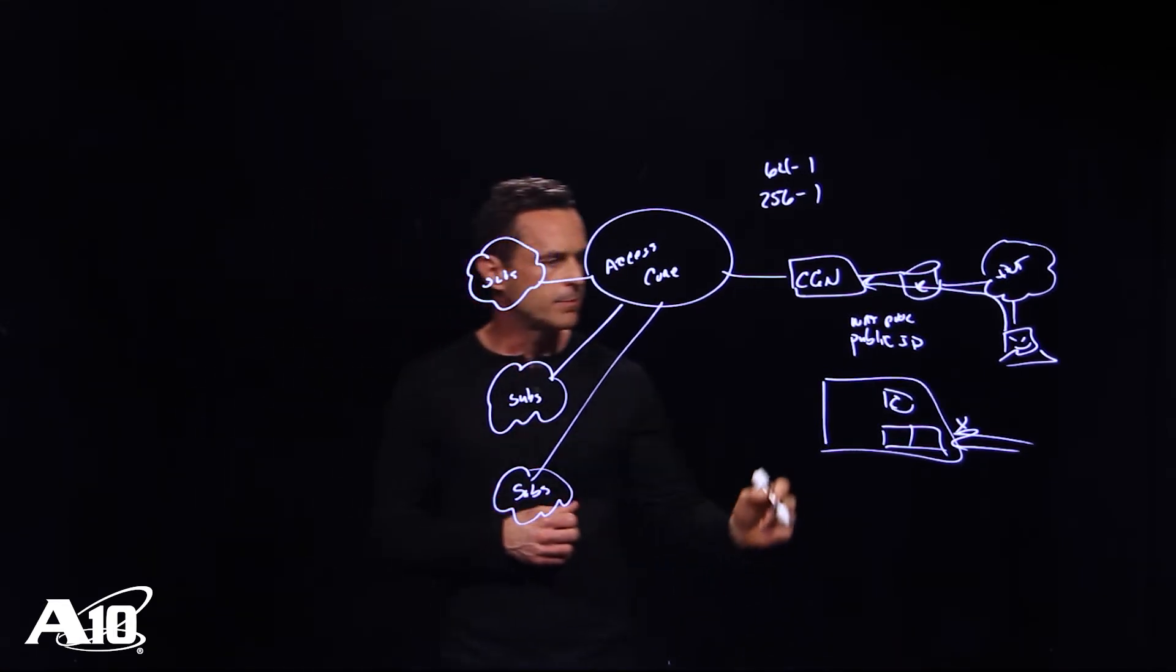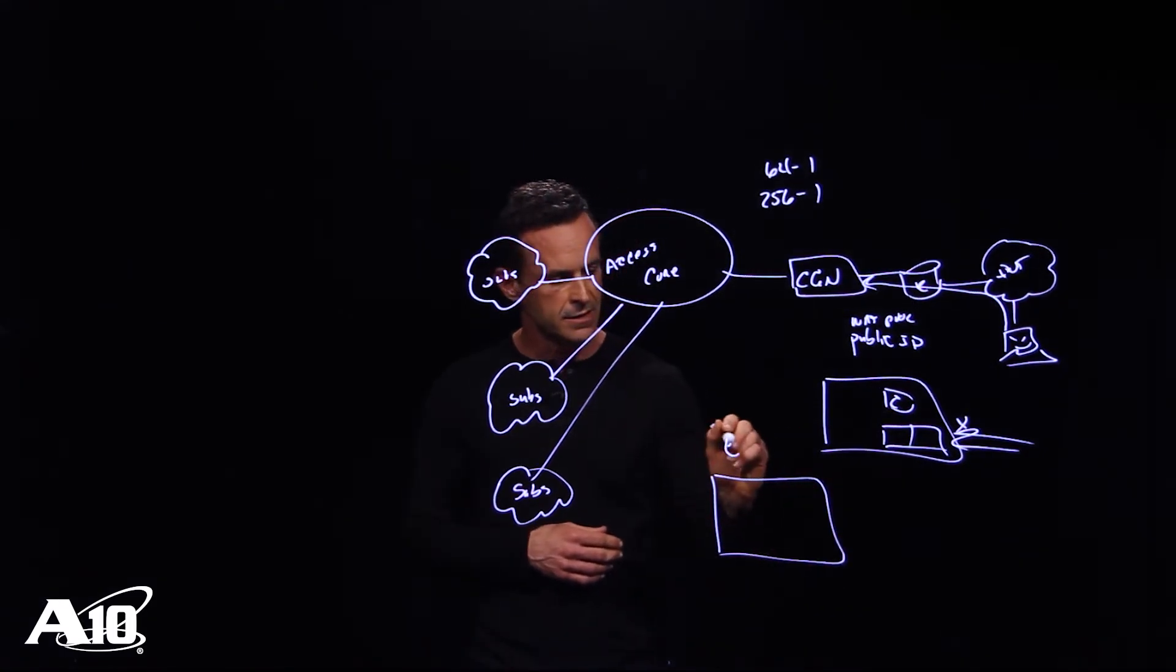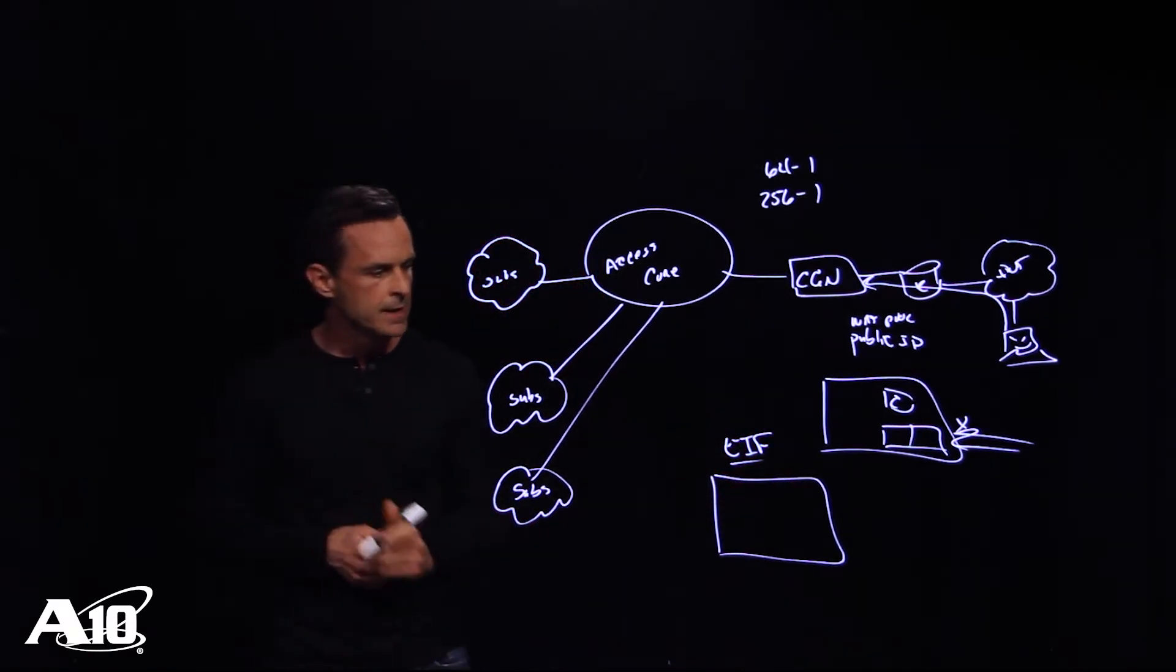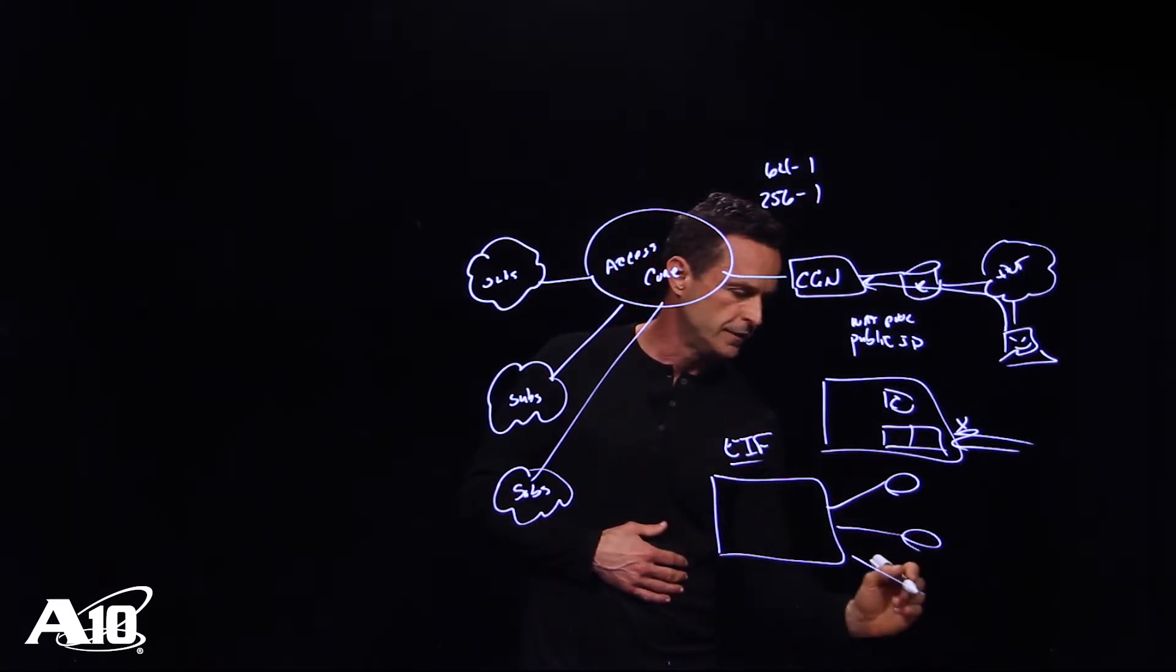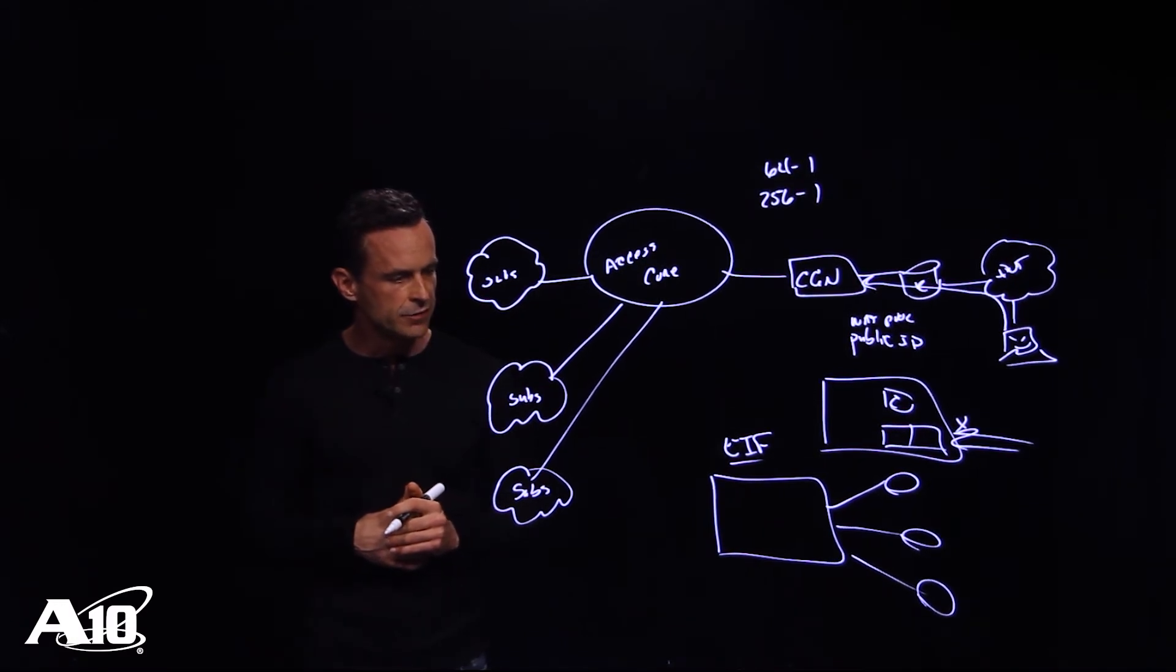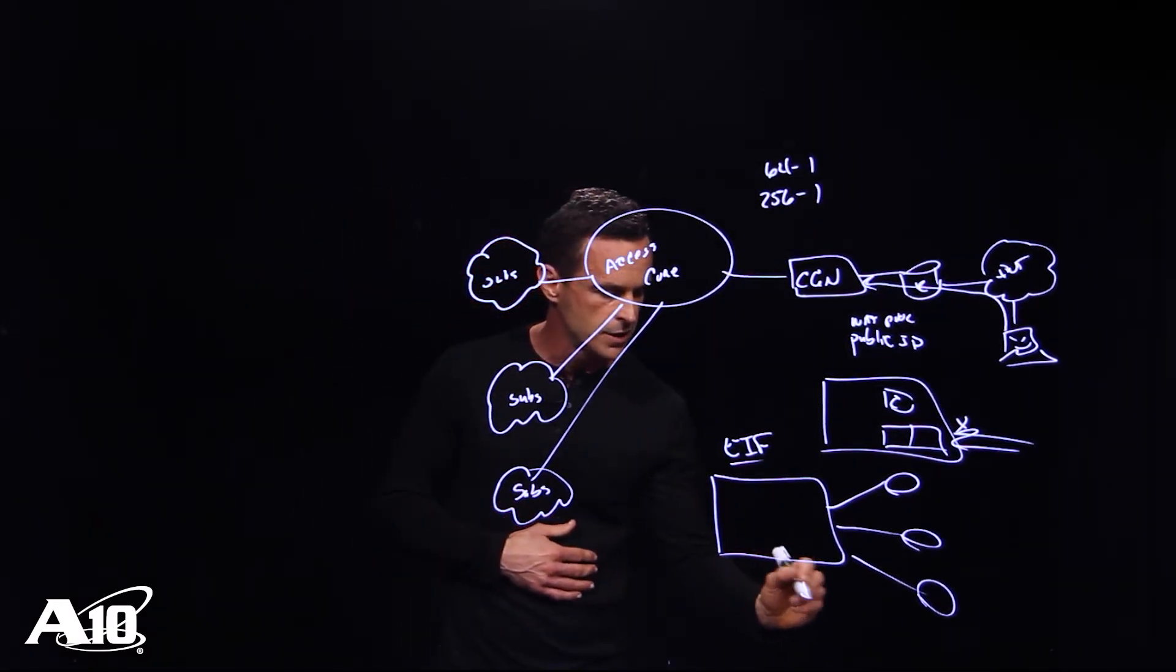The other type of attack we want to be aware of is an attack that exposes endpoint-independent filtering connections. In these types of attacks, we have multiple entities in the internet which could be assembled as a botnet and they are using endpoint-independent filtering connections to actually attack a known NAT pool IP address and port.